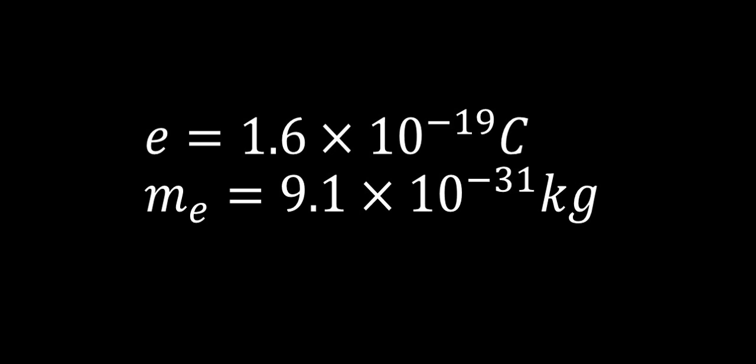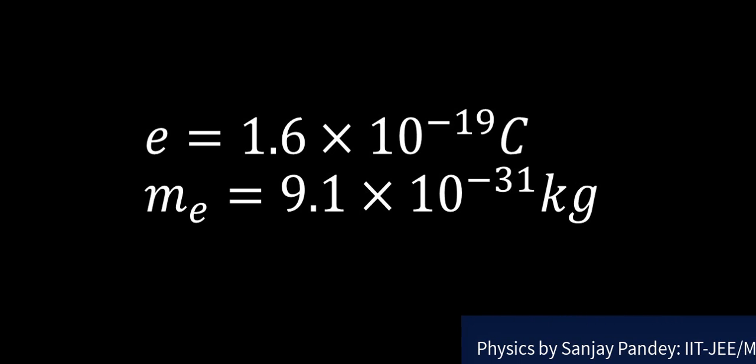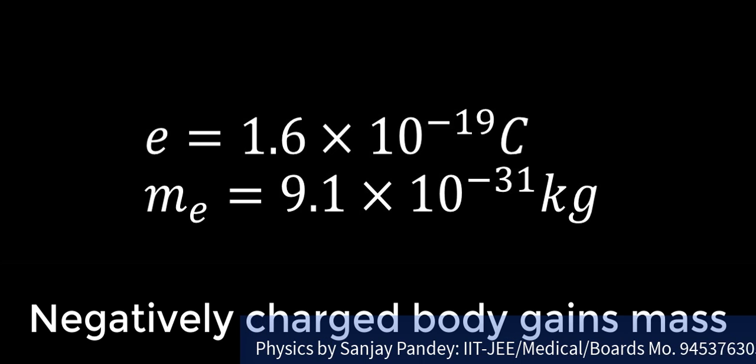Nature of charge on electron is negative. And mass of electron is 9.1 × 10^-31 kg. So, if a body is negatively charged, it means there are surplus of electrons. As each electron has mass 9.1 × 10^-31 kg, the negatively charged body gains mass.